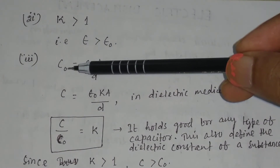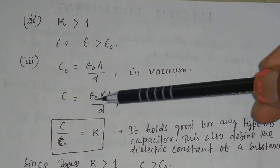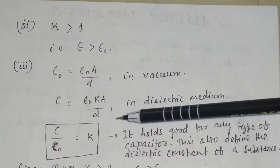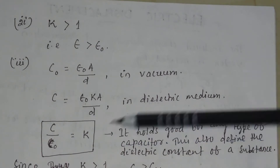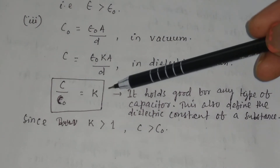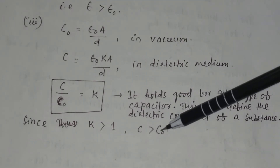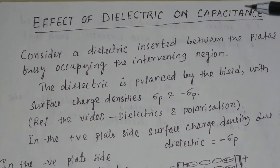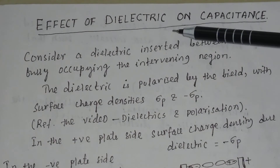In vacuum, the capacitance C0 equals epsilon 0 A by d. But in a dielectric medium, C equals epsilon 0 k A by d. Taking the ratio, C divided by C0 equals k. This is the definition of the dielectric constant, and this relation holds good for any type of capacitor. Since k is greater than 1, C is always greater than C0.